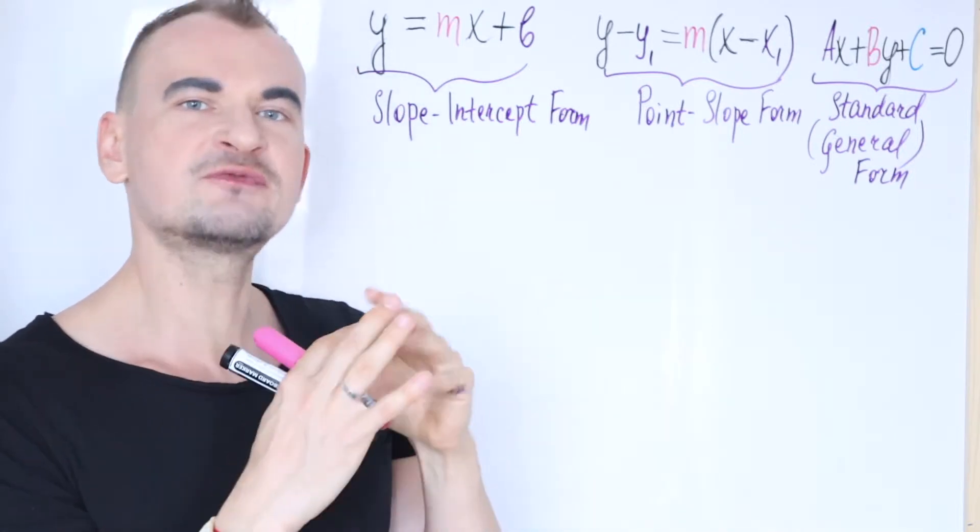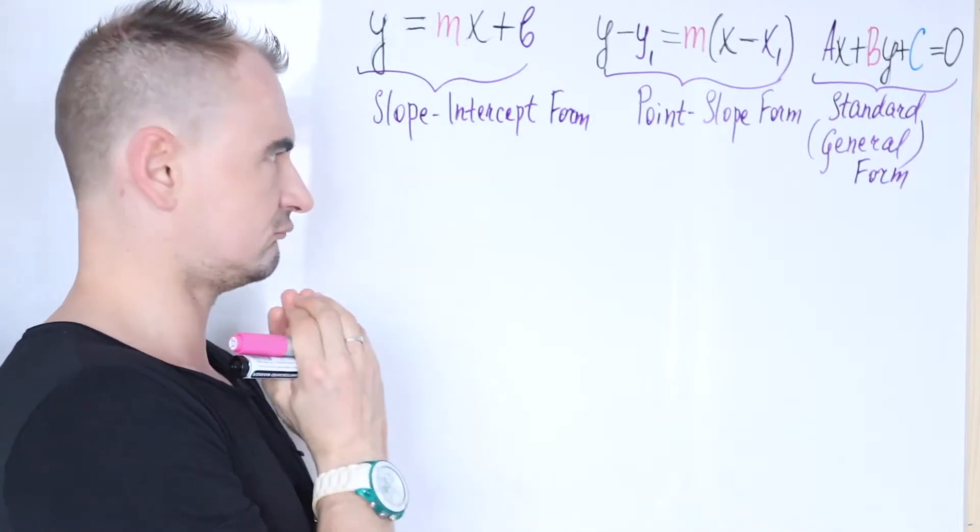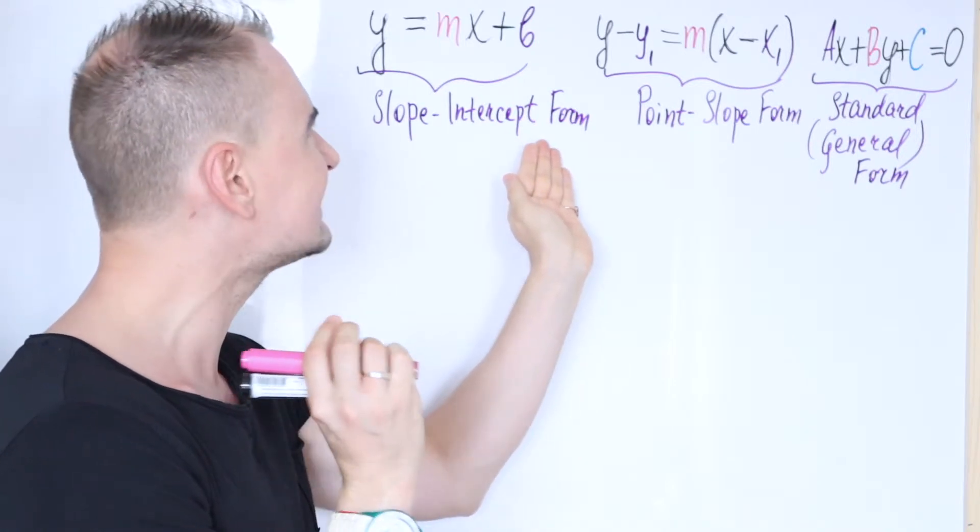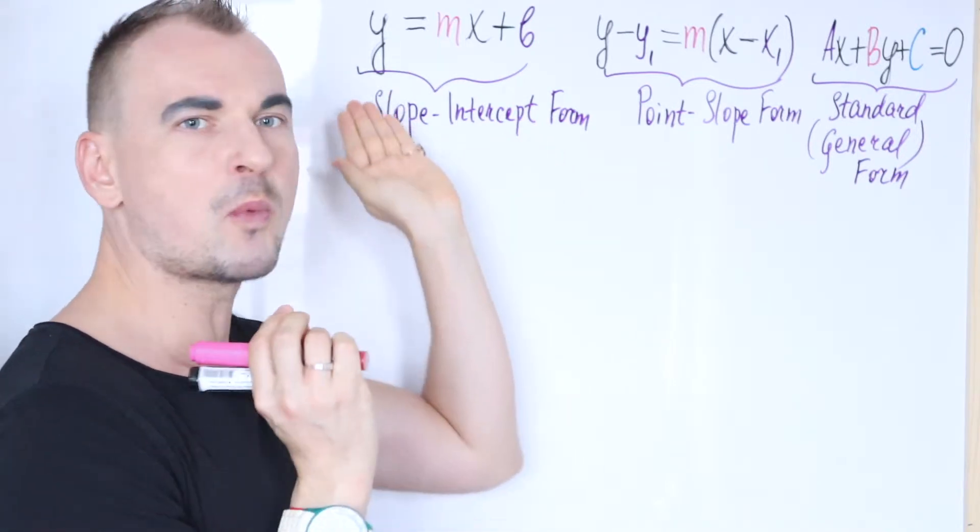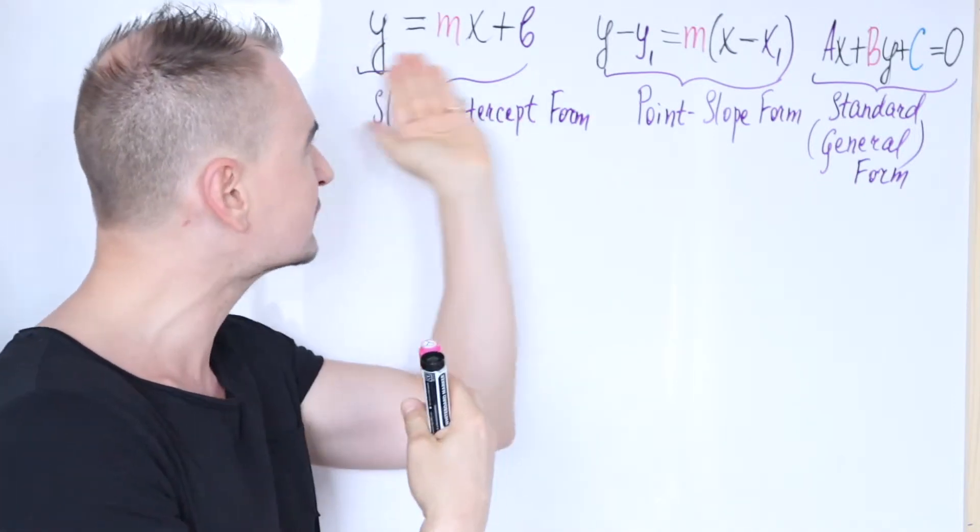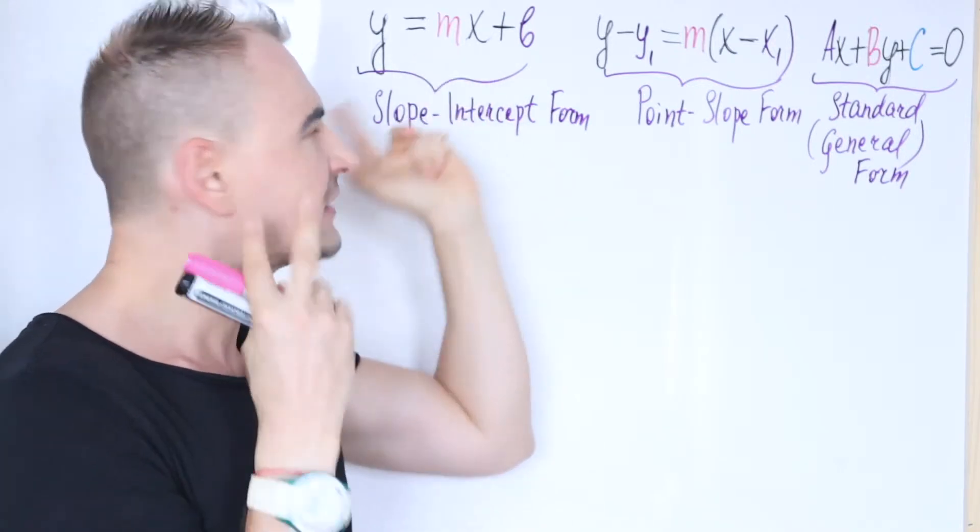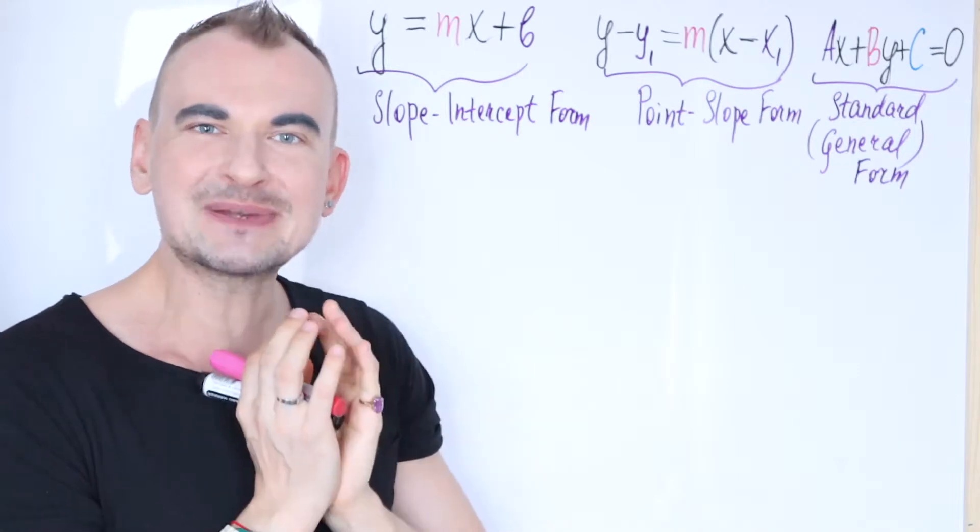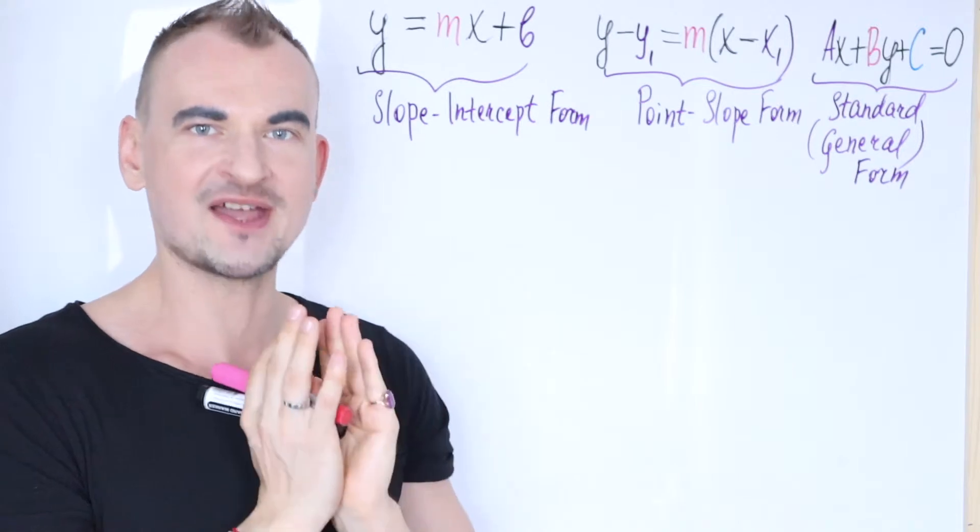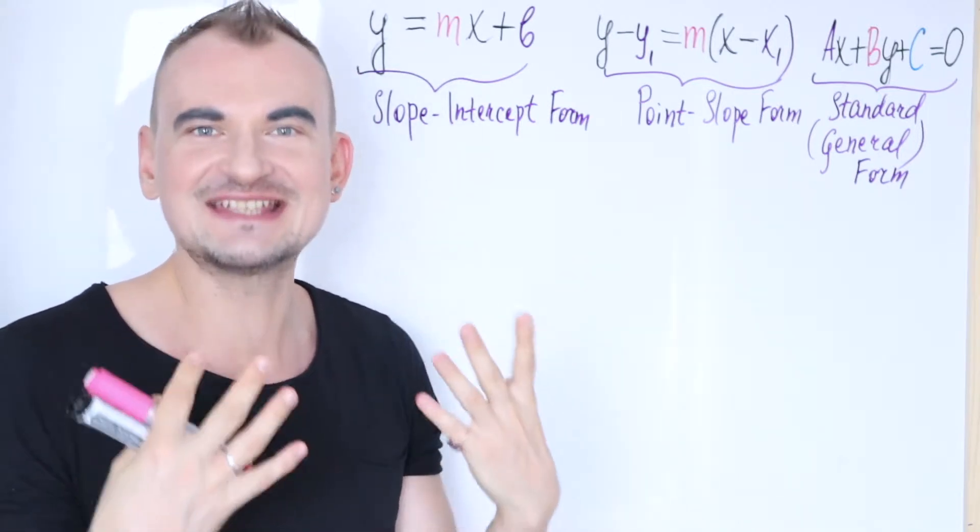Now, all of these forms, they're interchangeable. So let's take a quick look at the first one. Slope-intercept form basically means when your variable y is isolated, so y is explicitly written in terms of x, and the coefficient in front of x, this pink m, basically represents the slope or gradient of this straight line.